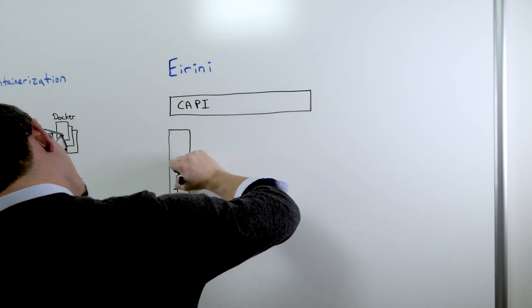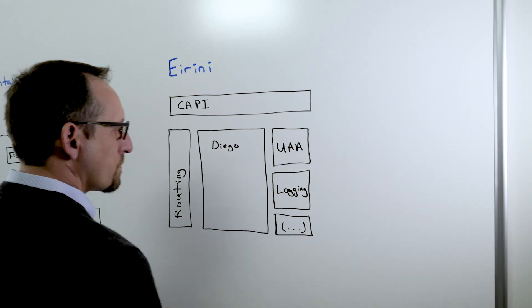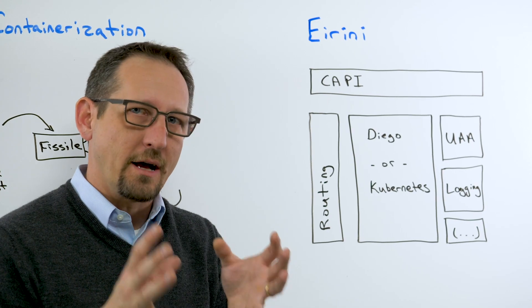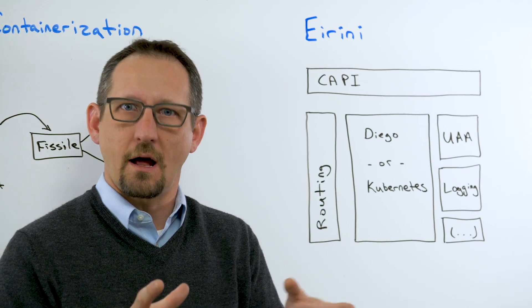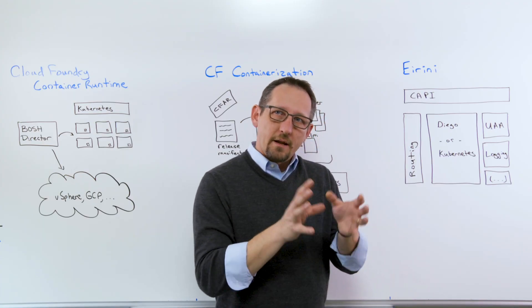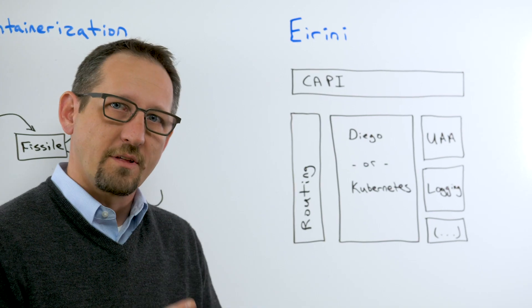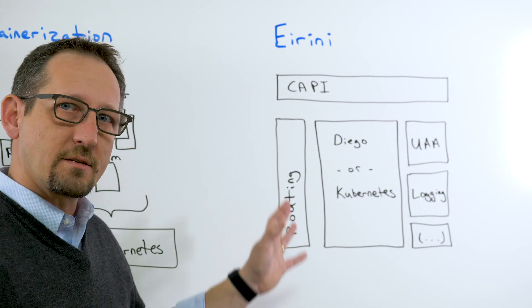This one's called Eirini. This is when we tear inside the Cloud Foundry application runtime, that PaaS part of the Cloud Foundry technology stack. Inside that PaaS part of the Cloud Foundry stack we have lots of different smaller projects.